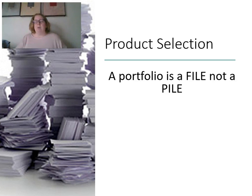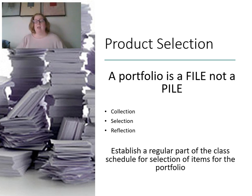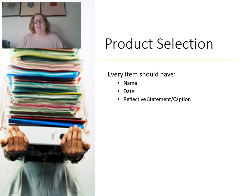Product selection is maybe the most important idea when thinking about portfolios. A portfolio is a file, not a pile — we do not want to put every single thing a student does in a portfolio. We really want to think about what are the most important things, how am I selecting, and what's my purpose for including something. Collection, selection, and reflection should all be a piece of our portfolio system, and making it a regular routine in class — every nine weeks or every week — providing an opportunity for students to reflect on why they're selecting specific pieces. Everything should have a name, date, and some sort of reflective statement or caption.